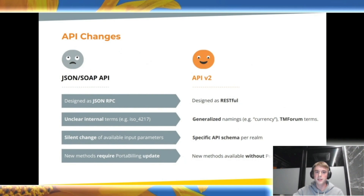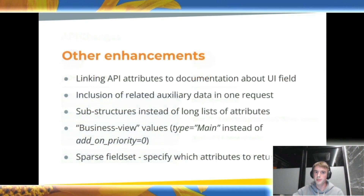New methods released in next maintenance releases for API version 2 will be available even in earlier Portabilon installations for which API version 2 is available. You are not required to go through a full system update to deliver new API methods on your installation. API field descriptions will have a link to the Portal 1 product documentation about the equivalent field on the user interface. You will be able to specify what auxiliary data to return in one request. For example, instead of using two API calls to get account information and its product, an API user will be able to specify inclusion of product information together with account information.